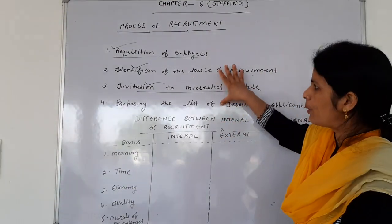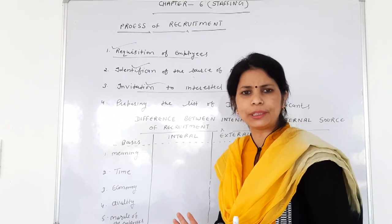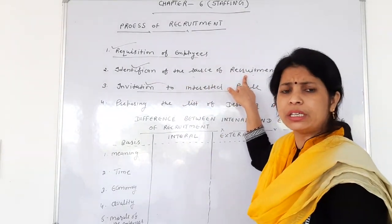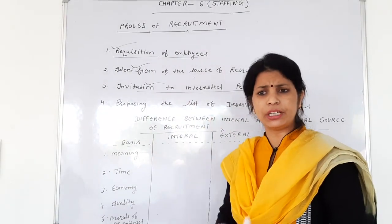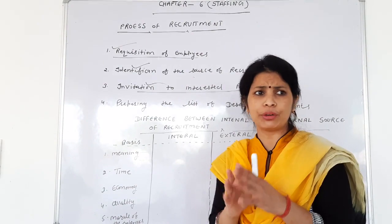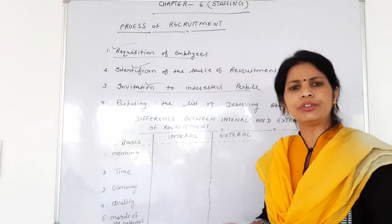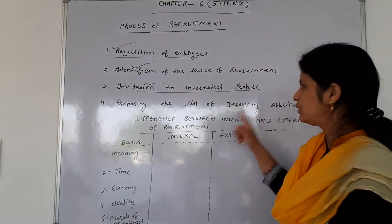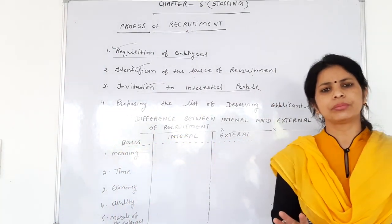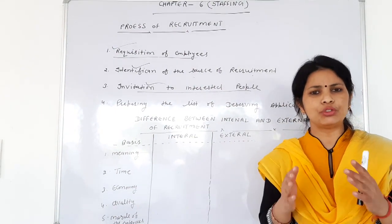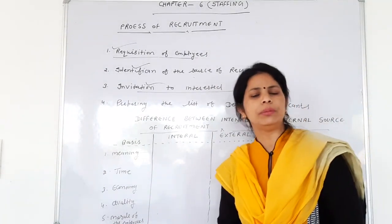So those are the four steps in the process of recruitment: first, requisition of employees — department-wise estimation of how many employees are needed; second, identifying the source of recruitment — internal or external, and which method; third, preparing an attractive invitation with all necessary information; fourth, preparing the list of deserving applicants — selected list for those meeting qualifications, rejected list for those who do not.